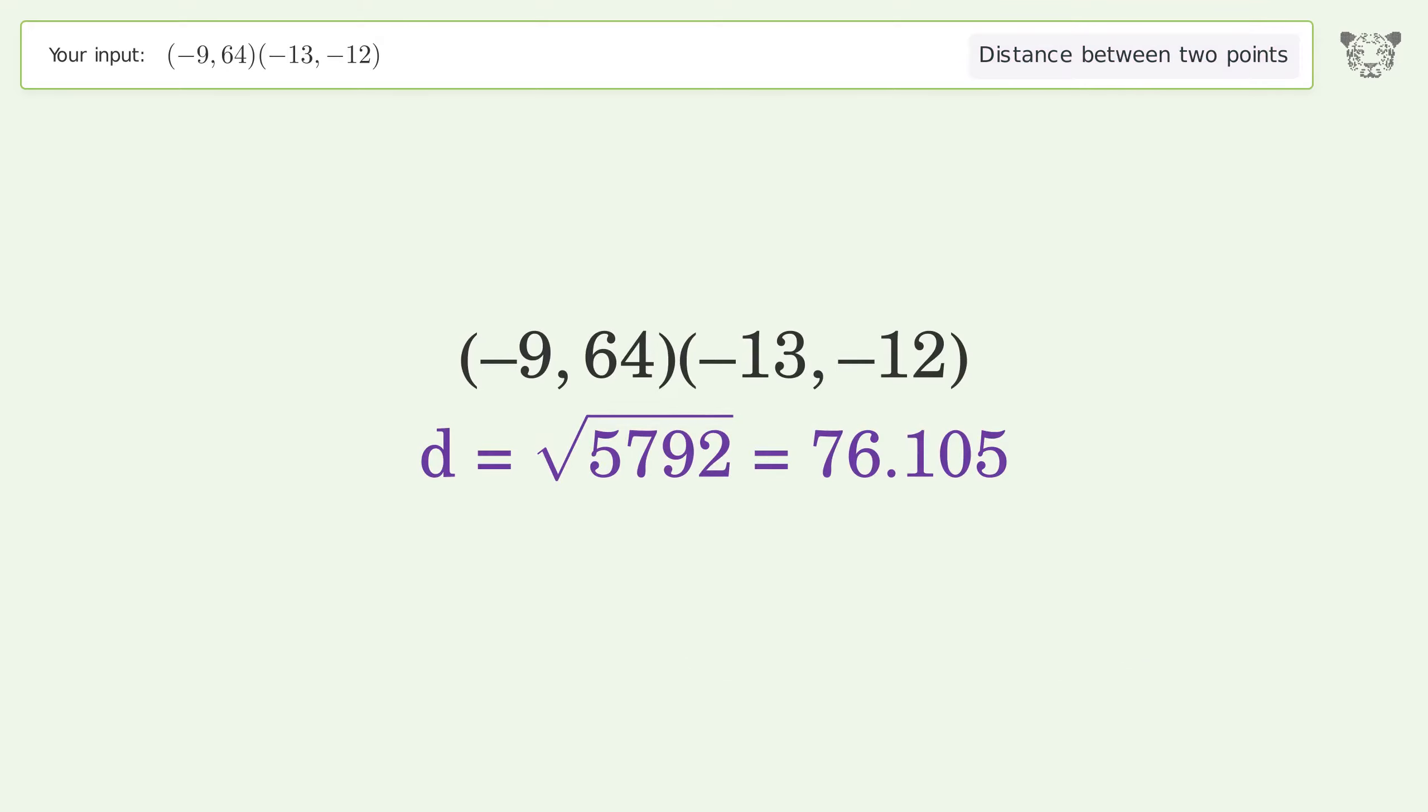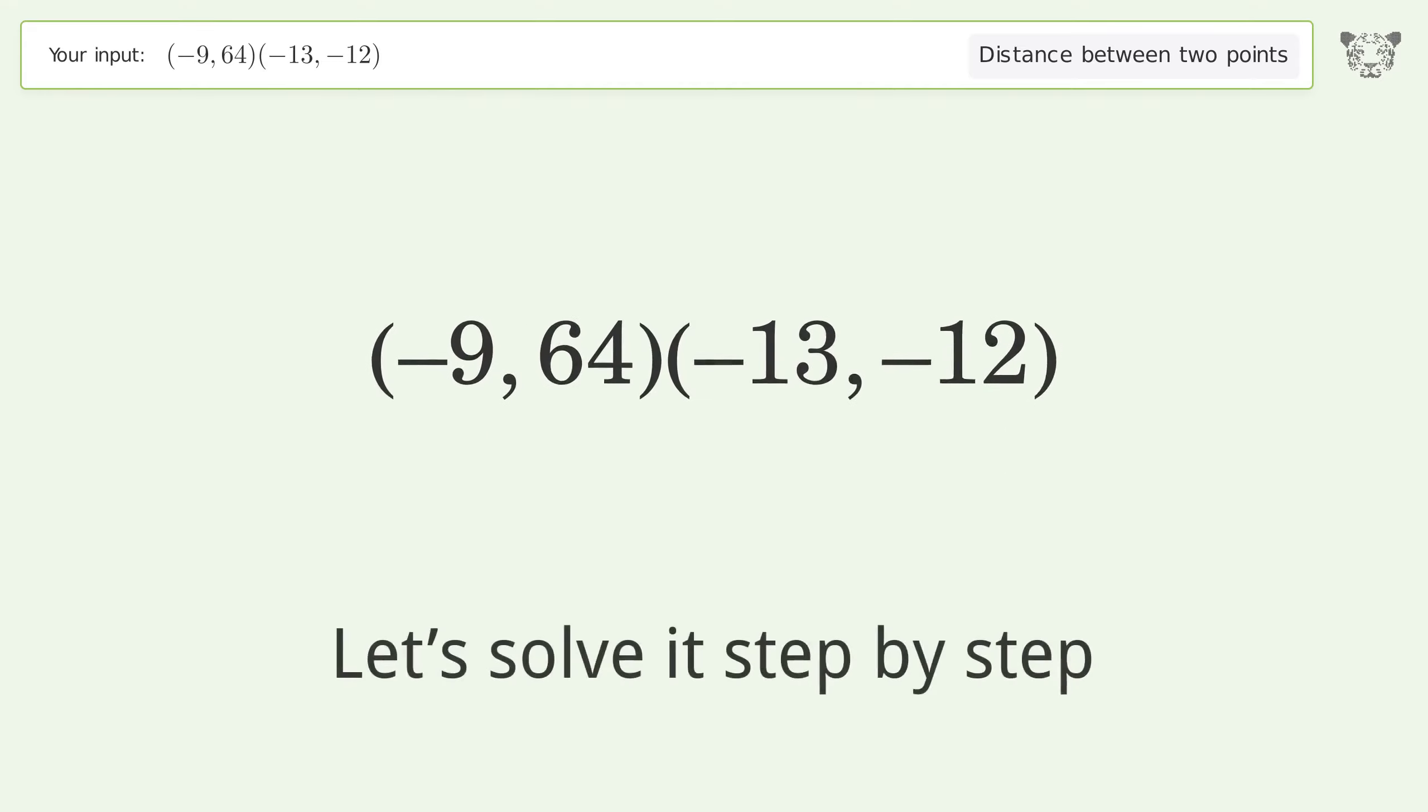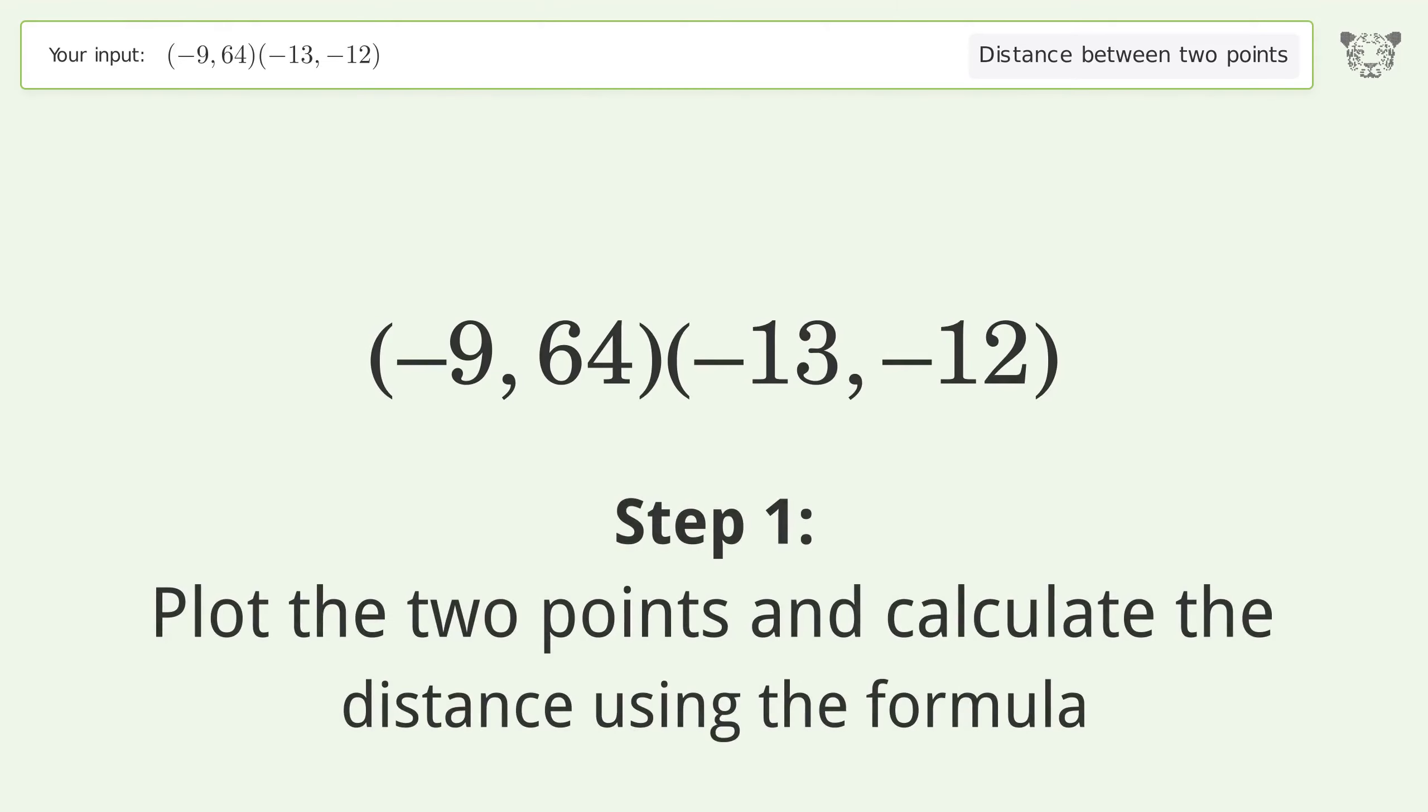You asked Tiger to calculate the distance between two points. The distance between the two points is the square root of 5792, or 76.105.